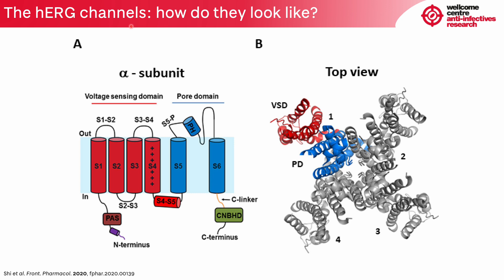So, how does the HERG channel look? In this top view — where top means the extracellular medium — we have four alpha subunits organizing themselves to form a pore in the middle. Each alpha subunit can be further divided into two domains: the voltage sensing domain in red and the pore domain in blue. The segments S1 to S6 are the transmembrane domains — protein sequences that span the membrane from the inside to the outside and back, forming this very complex protein.